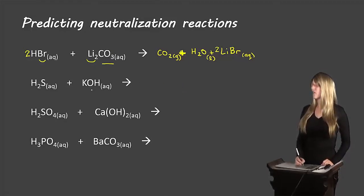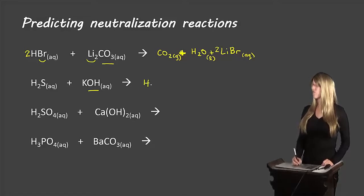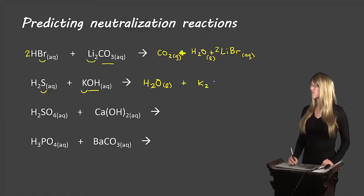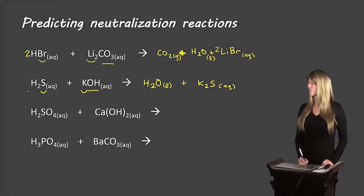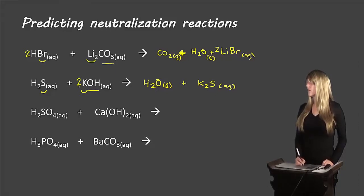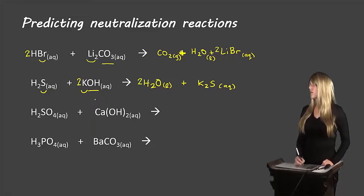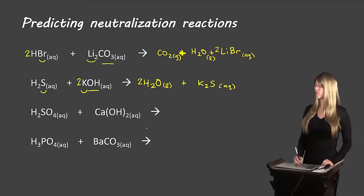Next we have H₂S and KOH. Since we're dealing with a hydroxide base, carbon dioxide is not formed, but water is a product. We're left with potassium and sulfur, giving us K₂S as our other product. Balancing: two hydrogens, two hydrogens; one sulfur, one sulfur; one potassium — so we put a two on KOH — that affects oxygen, so we put a two on water; two times two equals four hydrogens, two plus two equals four. All balanced.